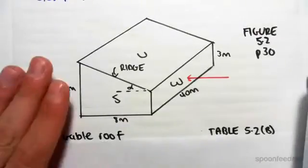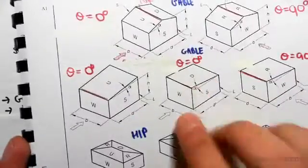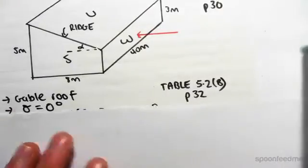So we can write down that our roof is a gable roof based on the fact that it has one slant. The next thing we need to work out is theta, which is the angle.